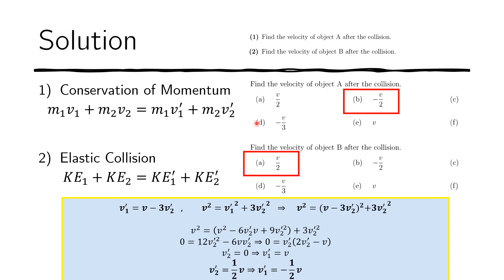Therefore, the answer we're looking for for problem one, which is the velocity of object A after the collision, is v₁' = -½v. And for object B, that's v₂' = ½v.